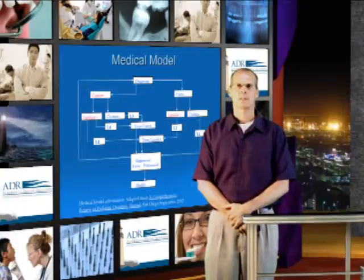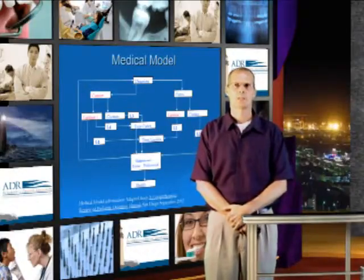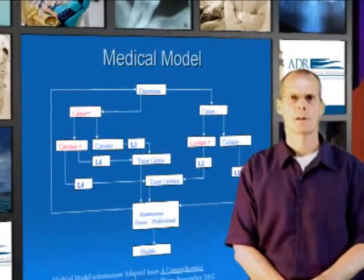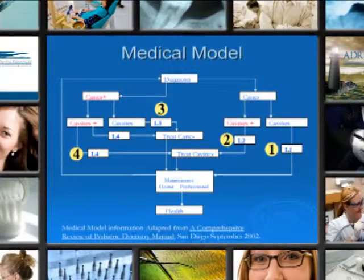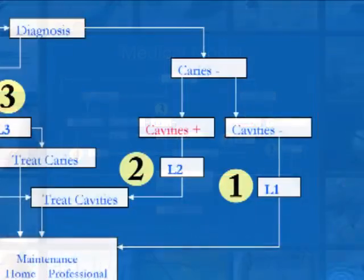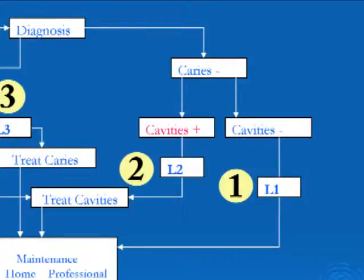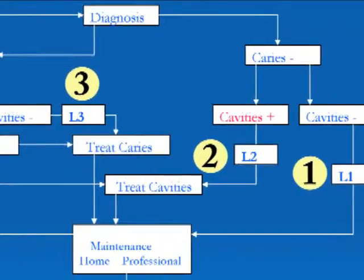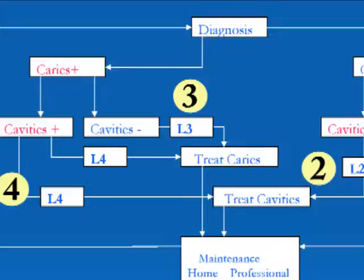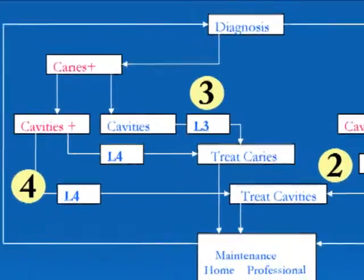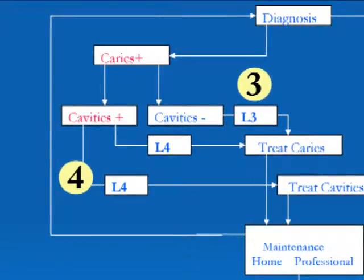We use a medical model approach to help us diagnose and treat our patients and recommend where they're going to be treated. We classify them in four different levels: level one, level two, level three, and level four. A level one classified patient does not have the caries process and they do not have cavities. A level two patient does not have the caries process yet might have a few cavities. The level three patient has the caries process and no cavities, and a level four patient has the caries process and cavities.